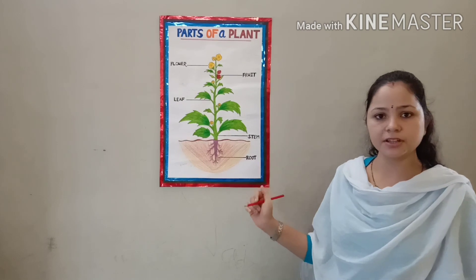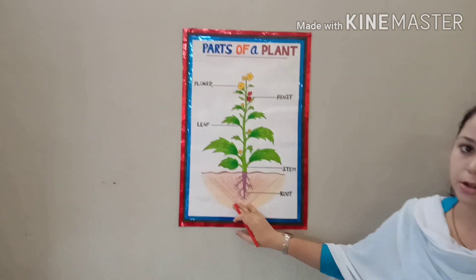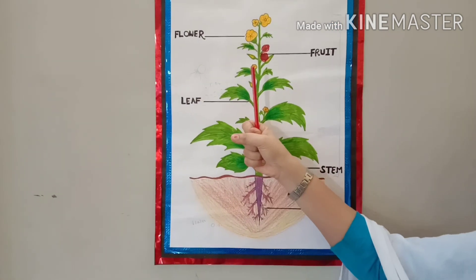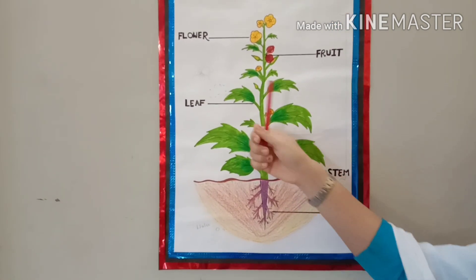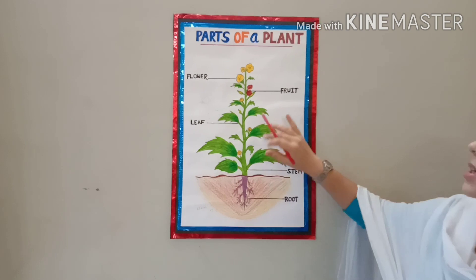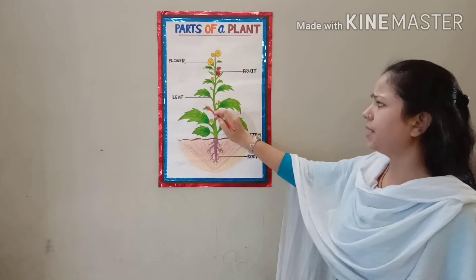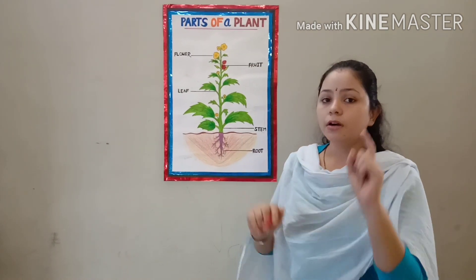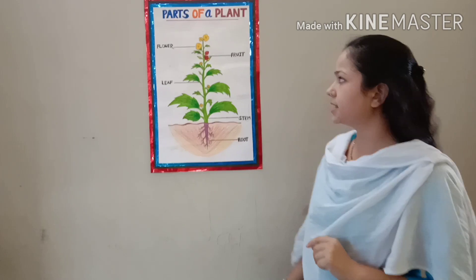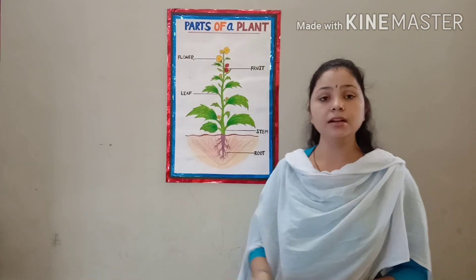Let's have a quick recap of what we have studied in this video. Function of root: root holds the plant in the soil and absorbs water and minerals from the soil. Stem holds the plant above the ground and carries water, minerals and food to the different parts of the plant. Leaf prepares food for the plant with the help of water, air and sunlight. Fruit protects the developing seed of the plant. Flower is called the reproductive part of the plant.